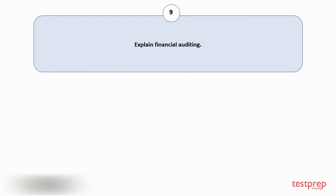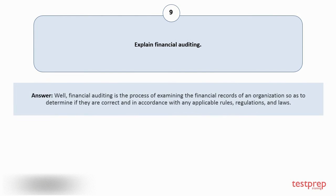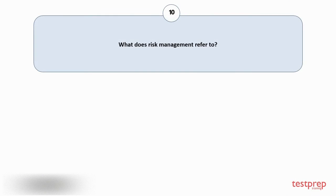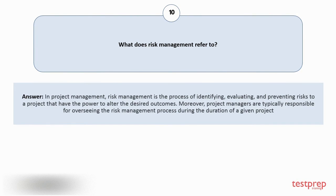Question number nine: Explain financial auditing. Financial auditing is the process of examining the financial records of an organization so as to determine if they are correct and in accordance with any applicable rules, regulations, and laws. Question number ten: What does risk management refer to? In project management, risk management is the process of identifying, evaluating, and preventing risks to a project that have the power to alter the desired outcomes.